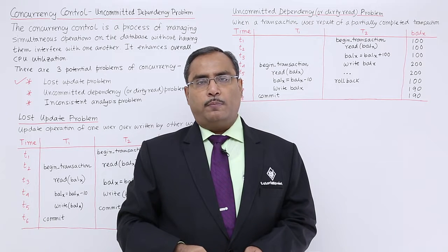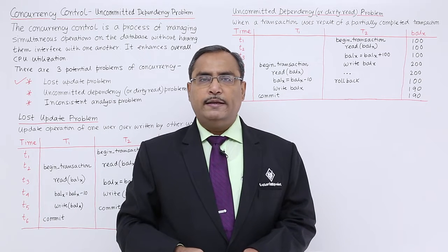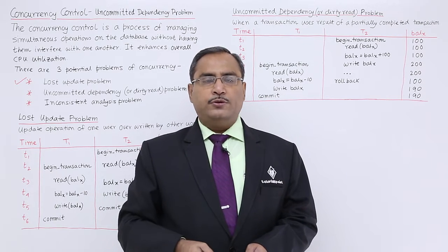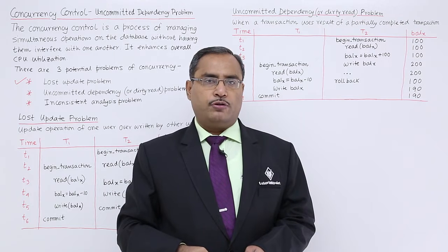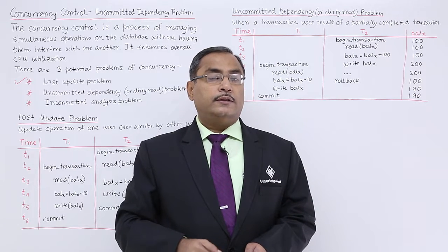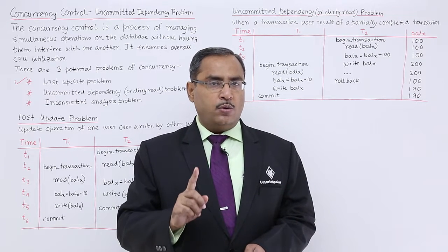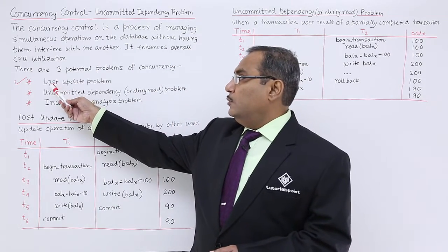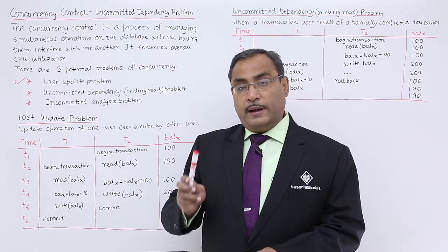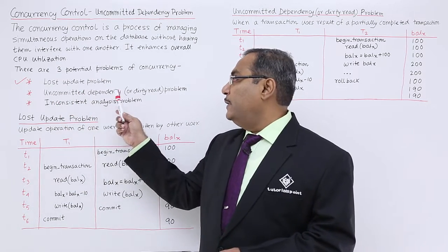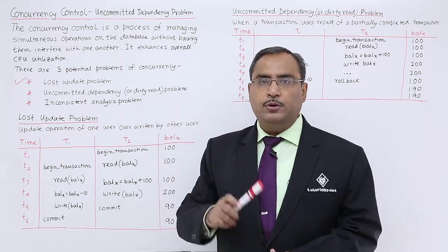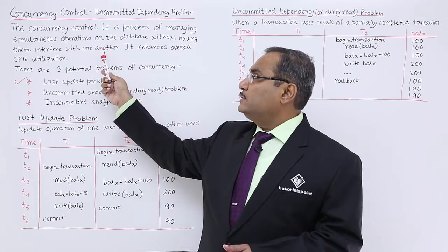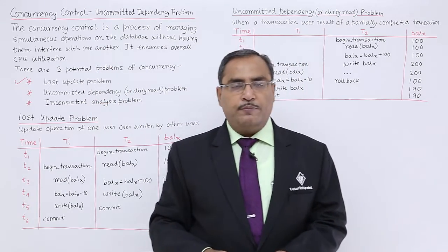In this session, we are discussing the problem that is uncommitted dependency dirty read problem. In our previous videos, we have discussed what is concurrency control. There are mainly three heads where all these potential problems can be categorized. They were lost update problem — we have a separate video on that — and uncommitted dependency or dirty read problem, which we will be discussing in this video. Please watch the videos where we discussed concurrency control and the lost update problem.